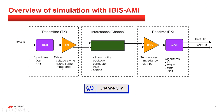This is a high-level overview of components in the IBIS AMI simulation. The traditional IBIS file is present in both TX and RX — it models the analog driver and termination effects. The interconnect channel is all the passive elements in the system: the on-die routing, the package, the board, the connector, cables, etc.